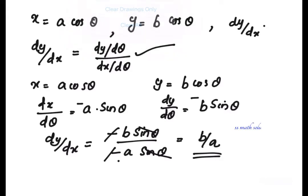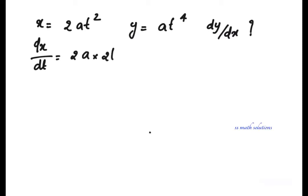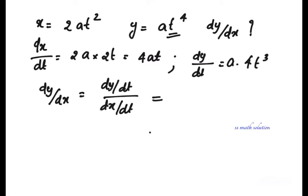Let us try another example. x is equal to 2a t squared and y is equal to a t raised to 4. Find dy by dx. We know that dy by dx is dy by dt divided by dx by dt. dx by dt is 2a times 2t, that is 4at. dy by dt is 4a t cubed. So dy by dx equals 4a t cubed divided by 4at. We can cancel 4a and t from both, leaving t squared as the answer.